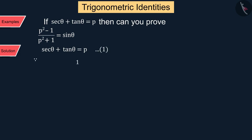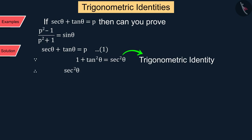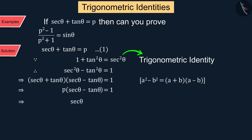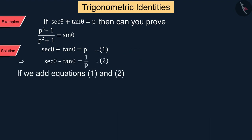We know that 1 + tan²θ = sec²θ, which we rearrange as sec²θ - tan²θ = 1. Since from equation 1 we know sec θ + tan θ = p, substituting gives us sec θ - tan θ = 1/p, which is represented by equation 2.